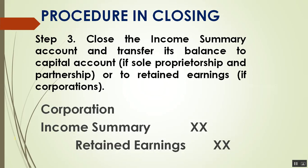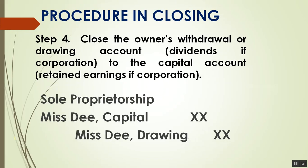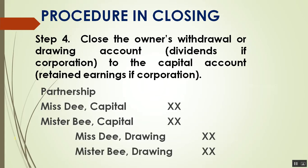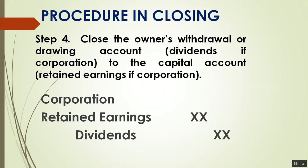For corporations, income summary is closed to retained earnings instead. Step 4 — the last to be closed — is the drawing account. For sole proprietorship and partnership, drawings are also closed to the capital account by debiting capital and crediting the drawing account, since drawings have a normal debit balance. For corporations, dividends are closed to retained earnings.